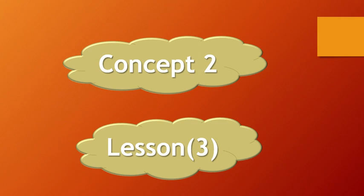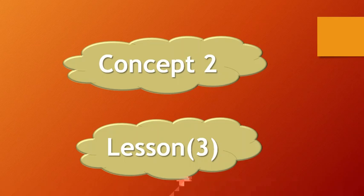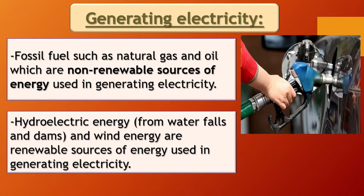At the previous concept we covered generating electricity. We can generate electricity from coal in the electric power station using fossil fuel. But since fossil fuel is non-renewable, we can also use renewable energy resources like water and wind to generate electricity.